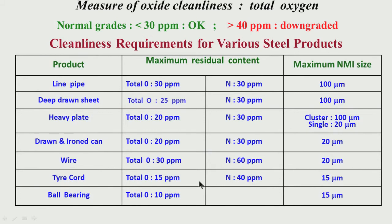If total oxygen is more than 20 ppm, it cannot be processed for heavy plate or drawn and iron can, since both require 20 ppm. When producing tire cord or ball bearing steel from cast billets, we must know the level of total oxygen and decide whether the billets can be processed to these stringent quality requirements. If total oxygen is 30 ppm or 35 ppm, maybe we can process it for building or construction materials, which do not have such high requirements.